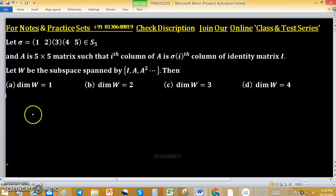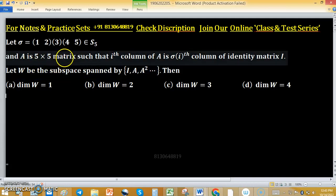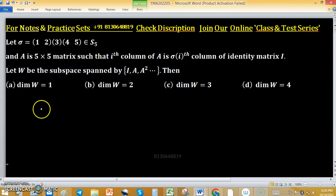An element σ is in S₅, the symmetric group of 5 symbols, and matrix A is a 5×5 matrix such that the ith column of A is σ applied to the ith column of the identity matrix.